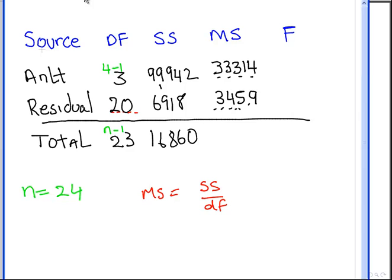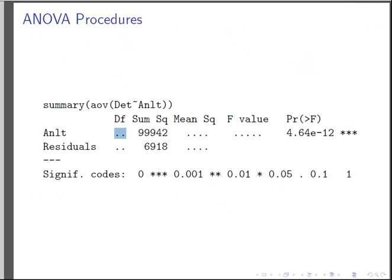Now what we have to do is find out the F-test statistic. And the F-test statistic is essentially the mean square for analysts divided by the mean square for error. So it is 33314 divided by 345.9. I make that to be 96.311. So that is our table filled out.